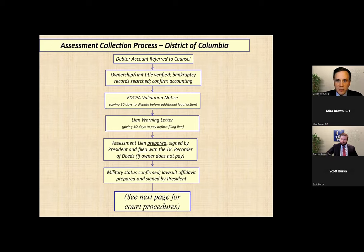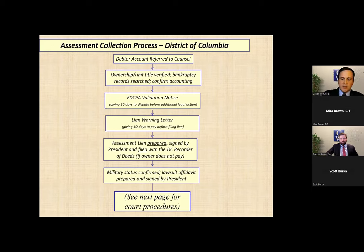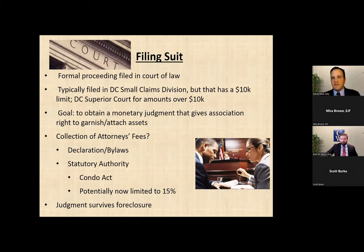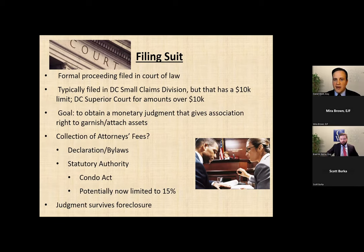Then we can proceed with collections actions: a lien warning letter followed by the lien, which has to be executed by the president and then filed with the land records. If an owner still doesn't pay after that, the next step is to proceed to a lawsuit to collect against the person personally. Filing a lawsuit is a formal proceeding filed in court; we have to get service on the individual, and this initiates the process to get a judgment against them personally. In DC we have two courts we typically use: the small claims division and DC Superior Court. The small claims division has a jurisdictional limit of $10,000, so anything over that amount we have to go to Superior Court.